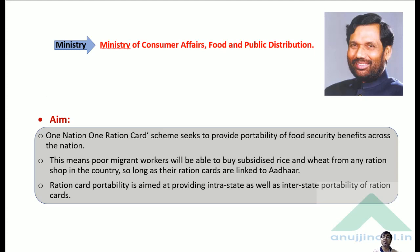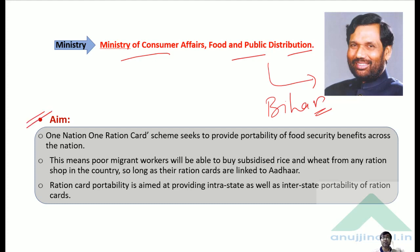This scheme works under the Ministry of Consumer Affairs, Food and Public Distribution, which is handled by Mr. Ramvilas Paswan, a Rajya Sabha MP from Bihar. The aim of the scheme is to provide portability of food security benefits across the nation — meaning poor migrant workers will be able to buy subsidized rice and wheat from any ration shop in the country, so long as the ration card is linked to Aadhaar.